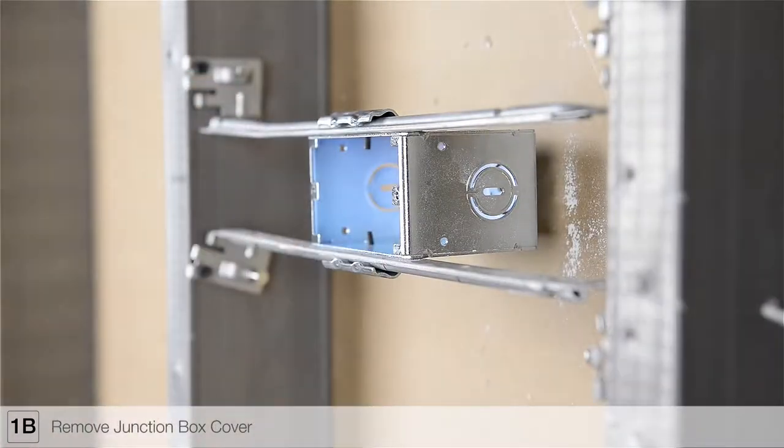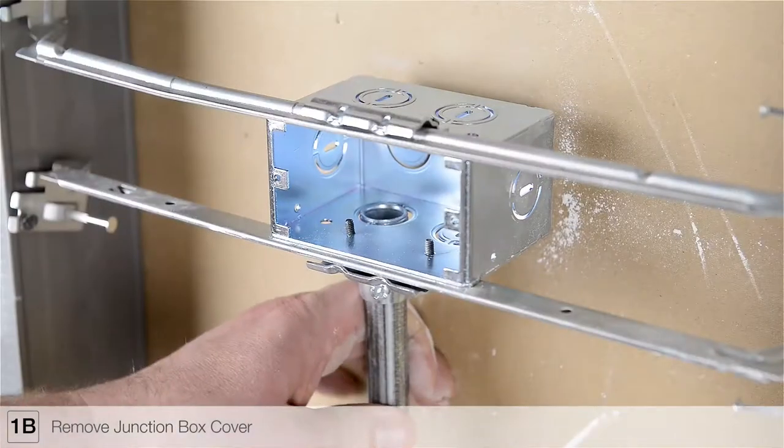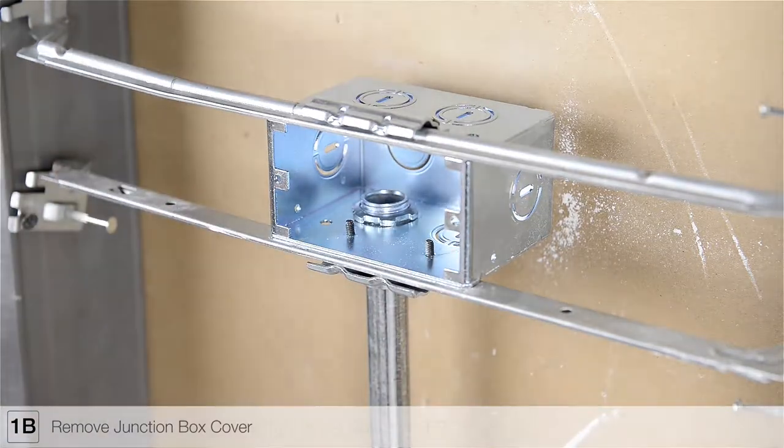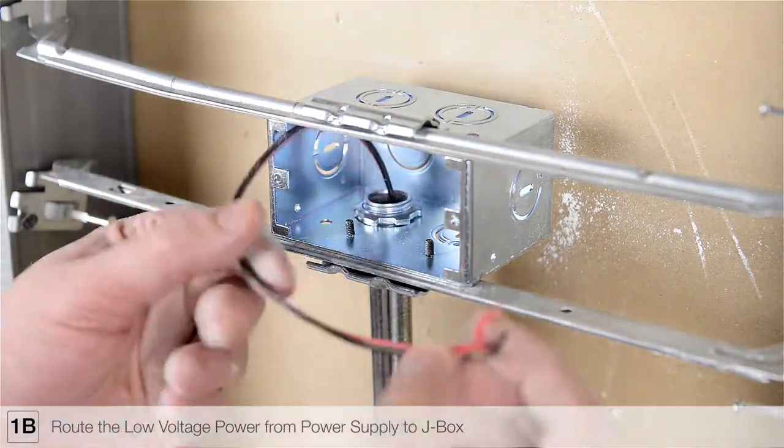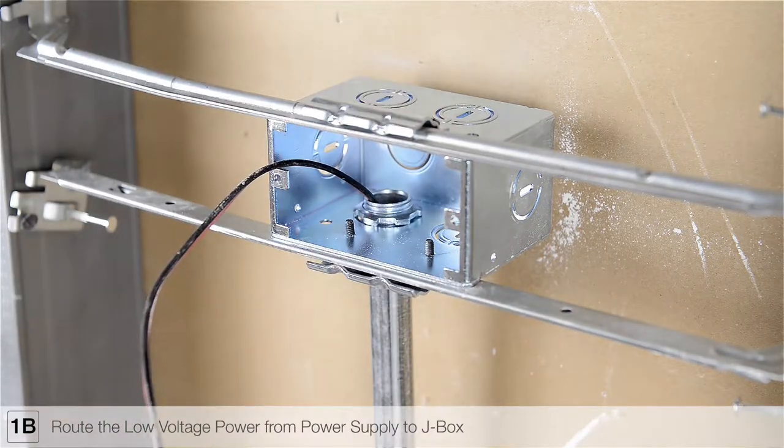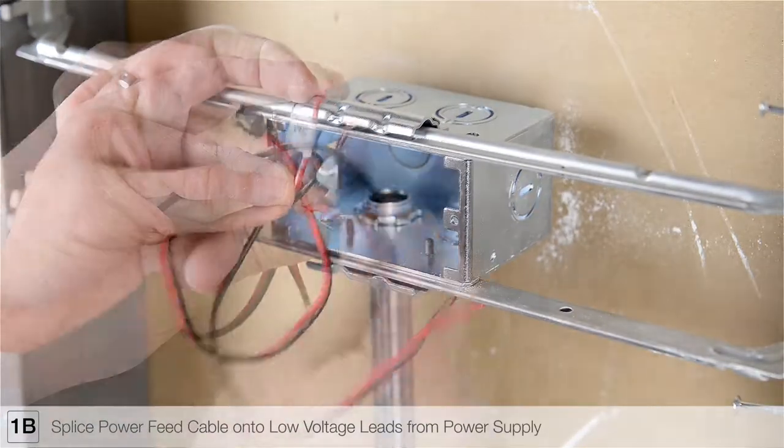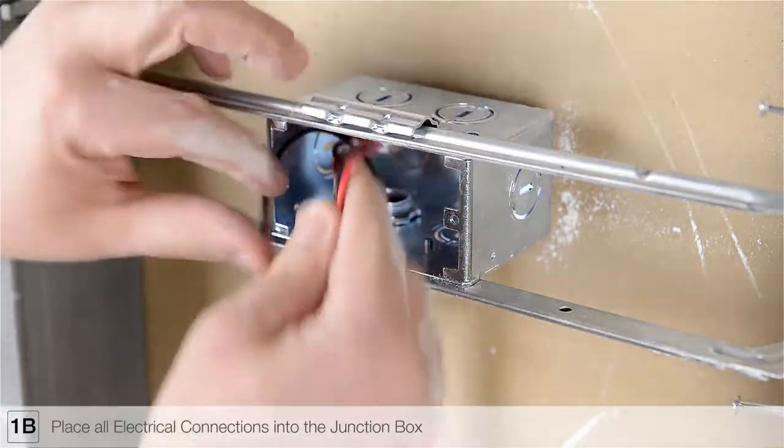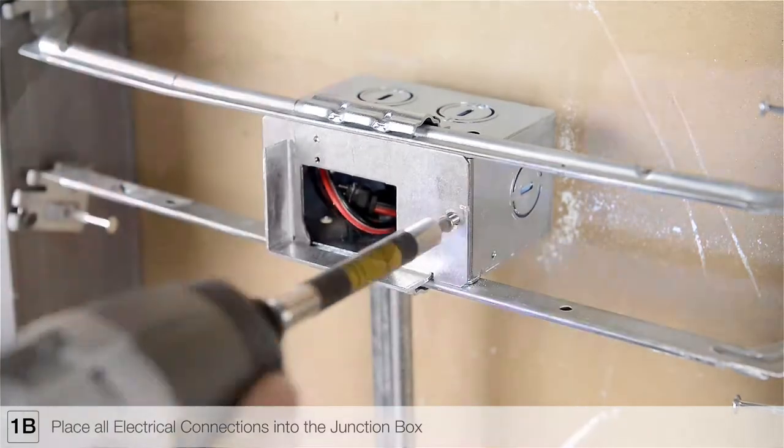Remove a knockout from the power feed junction box and, if required by your local electrical code, install conduit. Route the low voltage power wires from the remote power supply to the power feed junction box. Splice the included power feed cable to the low voltage power wires using wire nuts. Place all electrical connections into the junction box.